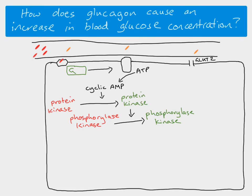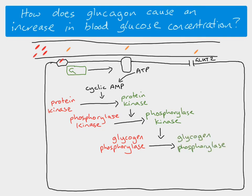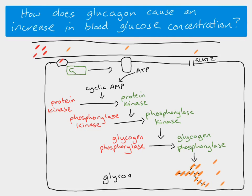The activated phosphorylase kinase then causes glycogen phosphorylase to become activated. This final activated glycogen phosphorylase acts on the glycogen molecule itself, removing glucose from the ends. This process is glycogenolysis — 'glycogen' and 'lysis' meaning splitting.